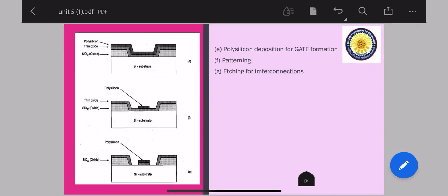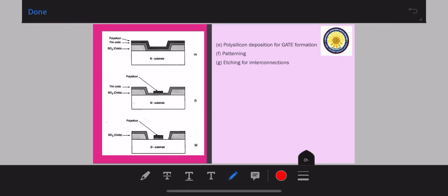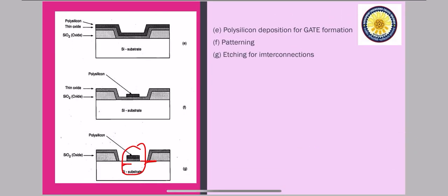So after deposition the polysilicon layer is patterned and etched to form the interconnects and the MOS transistor gate. So as you can see here, this gate structure has been completed and this space has been left for interconnects.